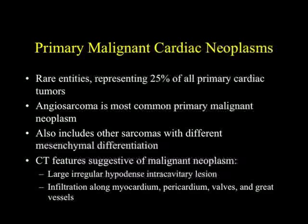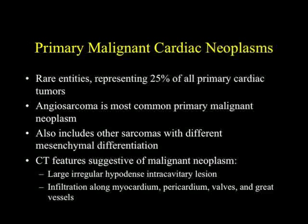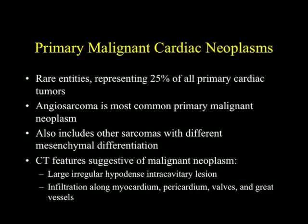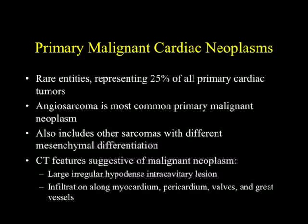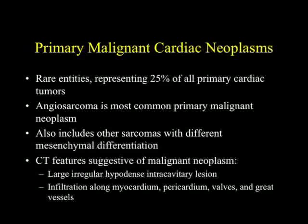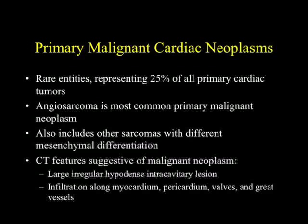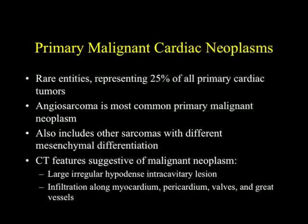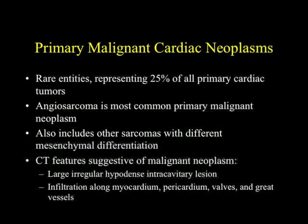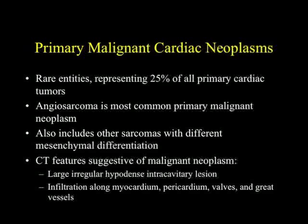What about primary malignant tumors? That's rare — less than 25 percent of all primary tumors. Angiosarcoma is the most common primary malignant neoplasm; there are also other sarcomas with different mesenchymal differentiation. In terms of CT features: large irregular hypodense intracavitary lesion, or it can be infiltration along the myocardium, pericardium, valves, and great vessels. Primary tumors of the heart are very often infiltrative, so when you see something infiltrating you have to be thinking about that. Lymphoma with direct extension or lung cancer with direct extension can cause similar findings, but usually those go along the great vessels or pulmonary arteries.